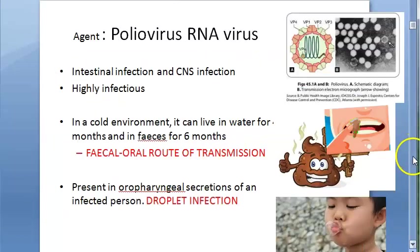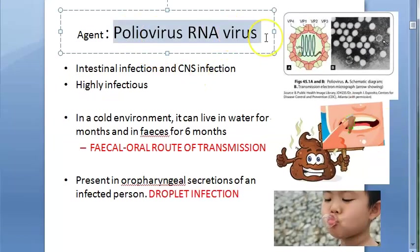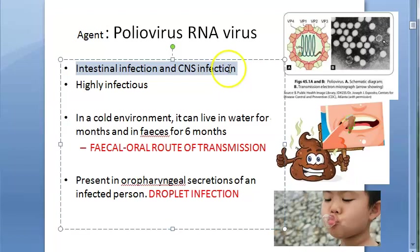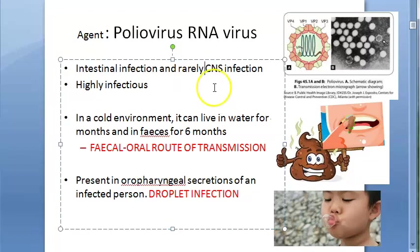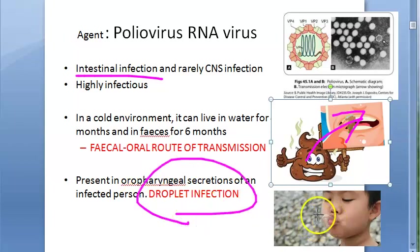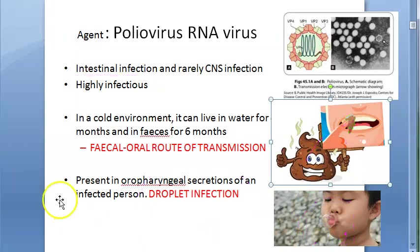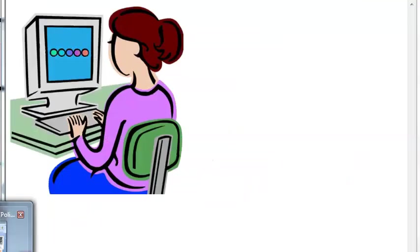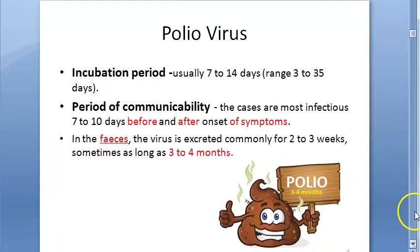First, let us look at the agent. The agent is the poliovirus, which is an RNA virus. It basically causes intestinal infection and rarely causes CNS infection. It is highly infectious. It spreads via the feco-oral route, and also via droplet infection through oropharyngeal secretions. So the two modes of transmission are feco-oral route and droplet infection.